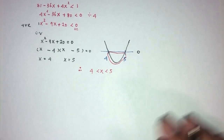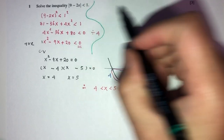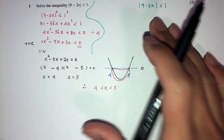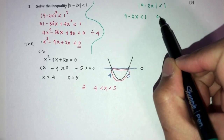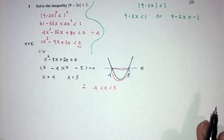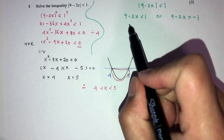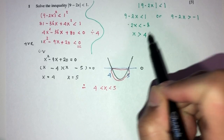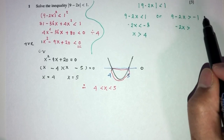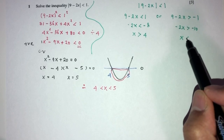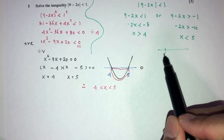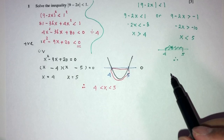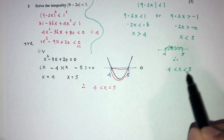Let's focus on the other way, which I believe is the easiest. So we have modulus of 9 minus 2x less than 1. We can rewrite this as: 9 minus 2x is less than 1, or 9 minus 2x is more than minus 1. Solving the first: minus 2x is less than minus 8, and dividing by a negative changes the sign, giving x greater than 4. For the second: minus 2x is greater than minus 10, giving x less than 5. So more than 4 and less than 5 — we also conclude x is between 4 and 5.